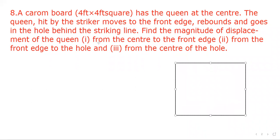Suppose this is carrom board. And then we have to locate the position of the queen and then its movement. The size is 4 into 4. Now queen is here. From here it strikes this point, this point, and then it goes to this hole. So we have to find out various values.